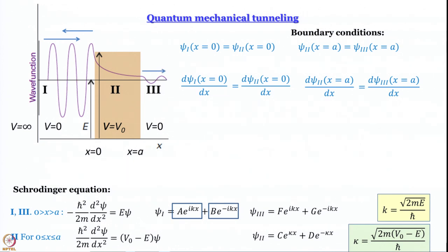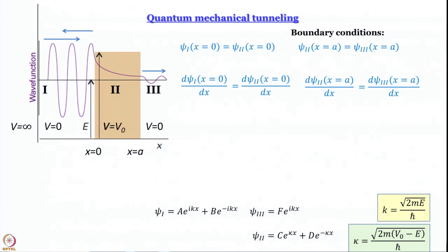For region 3, if we are considering the particle leaking out, the only direction needed is rightward. In the steady-state situation, no particle comes back, so we can set G=0 and keep only Fe^(ikx). This simplifies the expression for ψ₃.